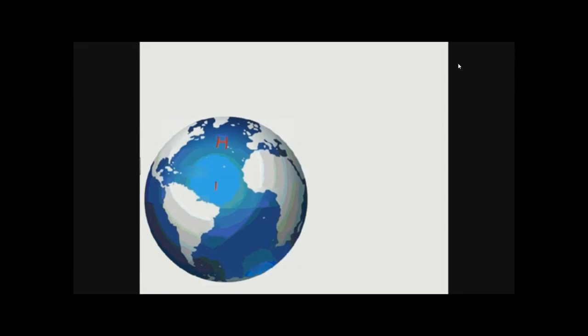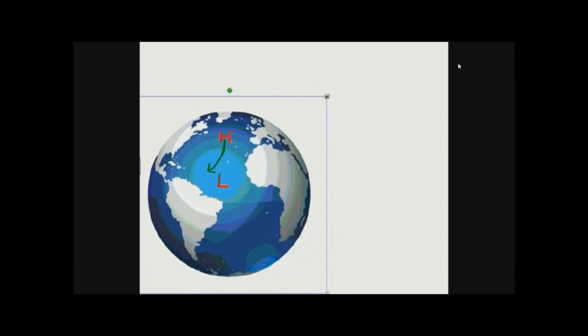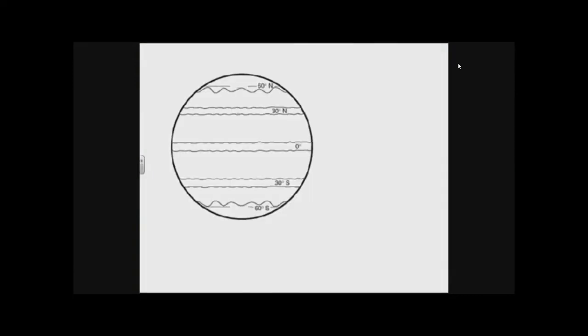If we look at a globe and place a high pressure here and a low pressure here, the air will move from high to low but it's going to curve to the right. In the southern hemisphere that curve is to the left. So if there's a high pressure system and a low pressure system in the southern hemisphere, the air moves from high to low but curves to the left.